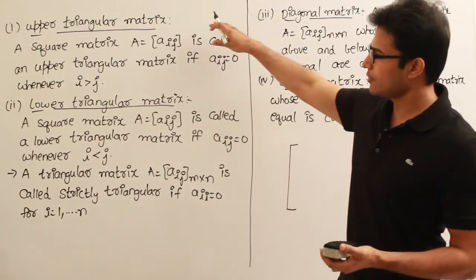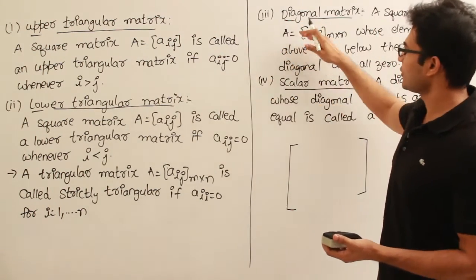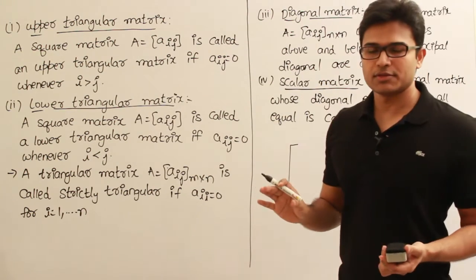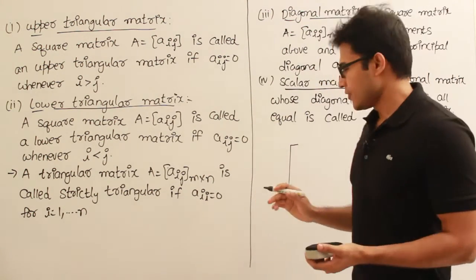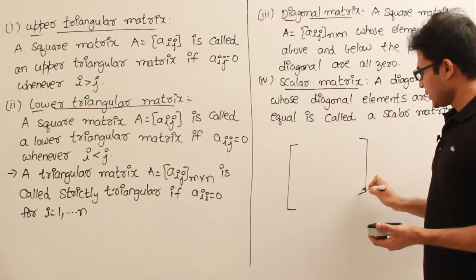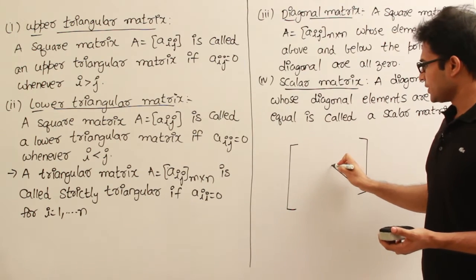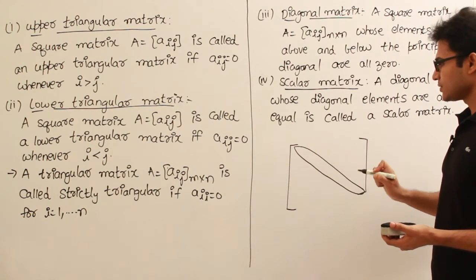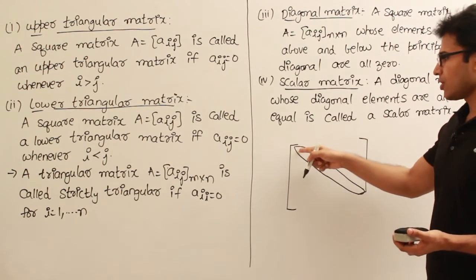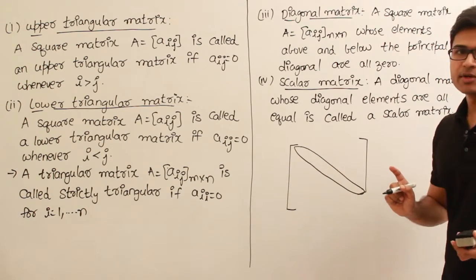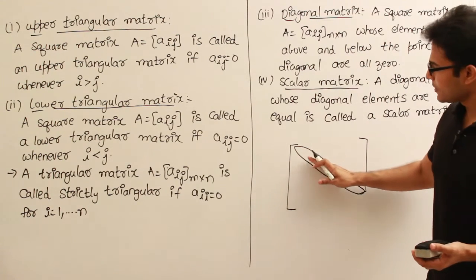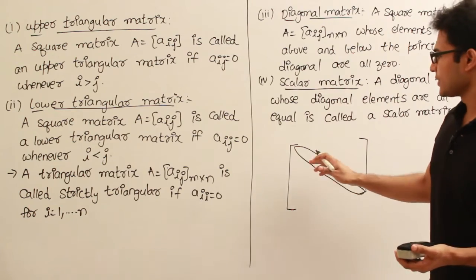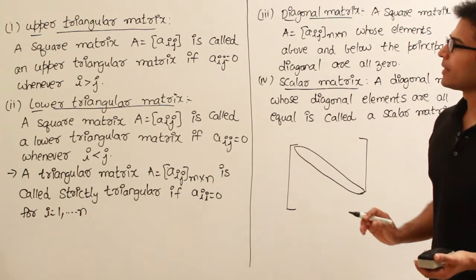Upper triangular matrix, lower triangular matrix, diagonal or scalar — everything is a square matrix. Now in a square matrix, if the row number equals the column number for any element, they are all called principal diagonal elements. With respect to this principal diagonal we shall discuss about these properties. This is the principal diagonal.